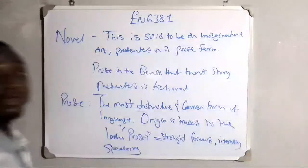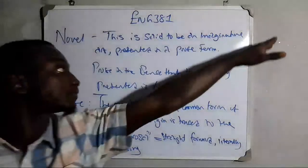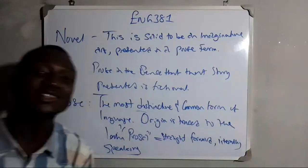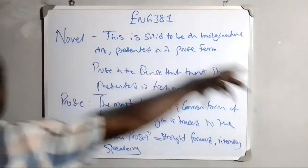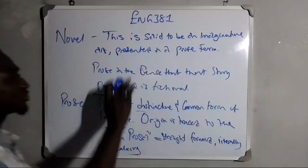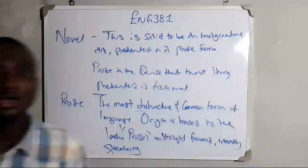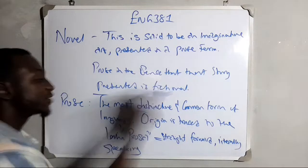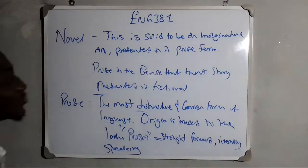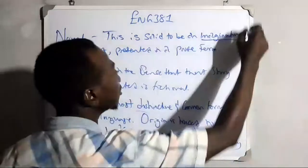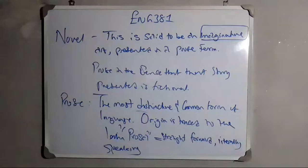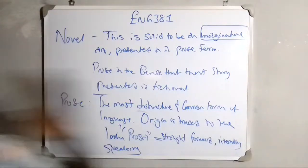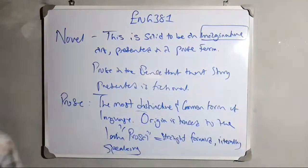So we have: a novel is said to be an imaginative act presented in a prose form. We say prose in the sense that the story narrated or presented in the novel is fictional — meaning it is an imagination, not real, it doesn't exist, but it is close to existence or still imaginative.